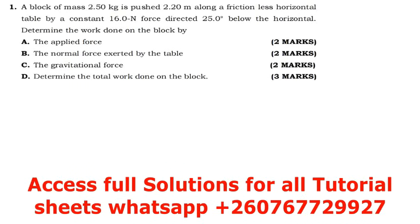The first question says: a block of mass 2.5 kg is pushed 2.2 meters along a frictionless horizontal table by a constant 16.0 N force directed 25 degrees below the horizontal. Determine the work done on the block by: part A, the applied force; part B, the normal force; part C, the gravitational force; and part D, the total work done on the block.